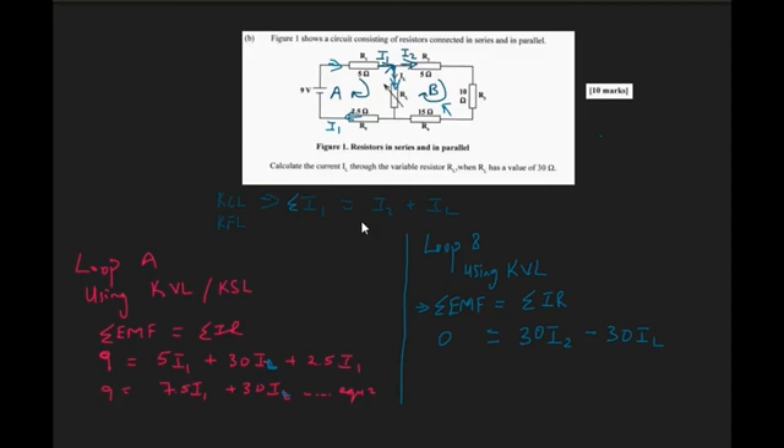And because it's the same current flowing through those resistors, I could just factor out I2. So this is where we have 30 I2.